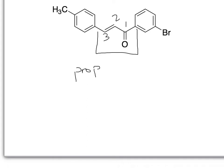So if we are naming it as a propanone, it will be prop because there's three carbons, prop-2-ene-1-one. And that will be the parent name for this particular compound.